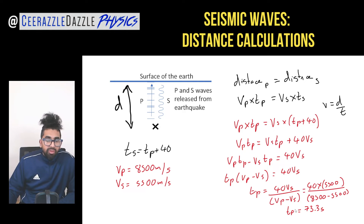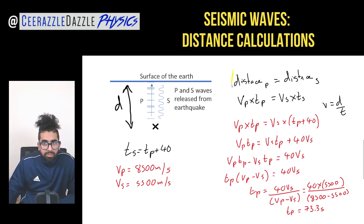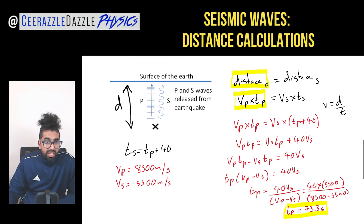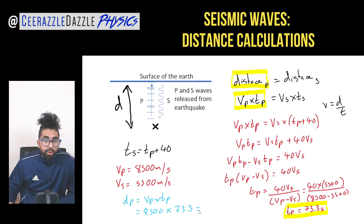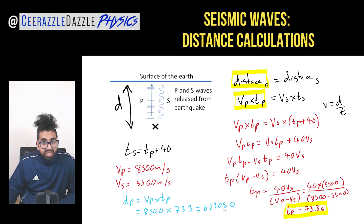Now we can find the distance. The distance equals the velocity of the P wave times the time taken for the P wave: distance = Vp × Tp = 8500 × 73.3. So the distance is 623,050 meters. That's the answer.